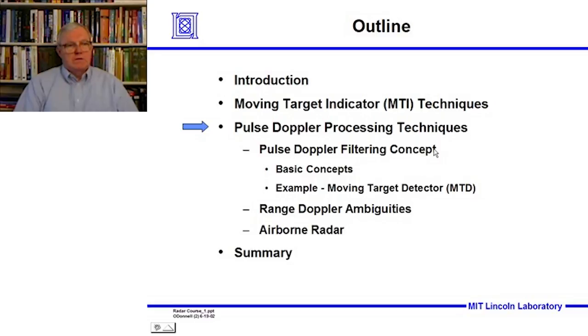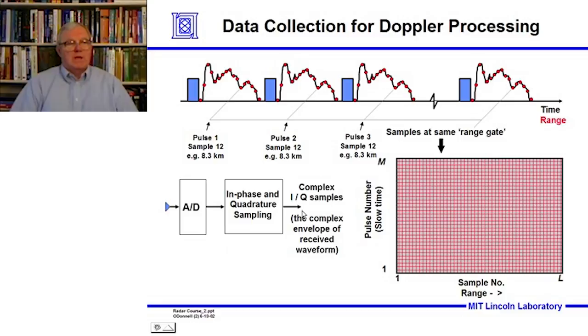Here we're going to look at the whole concept of Pulse Doppler Filtering, and we're going to go over some basic concepts to understand Pulse Doppler Filtering in detail, and then we'll follow that with an example of the Moving Target Detector, the so-called MTD implementation. Then we'll discuss Range Doppler Ambiguities, which will actually be in the third part of the lecture, and Airborne Radar, and summarize.